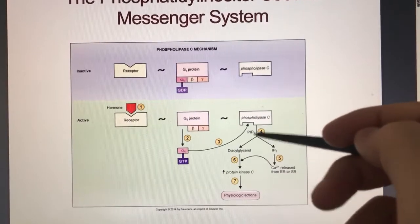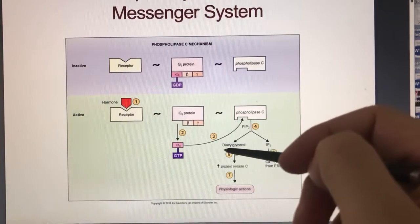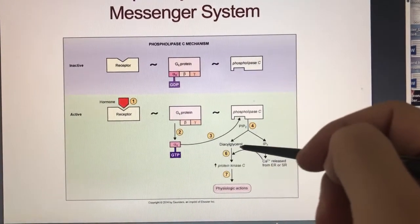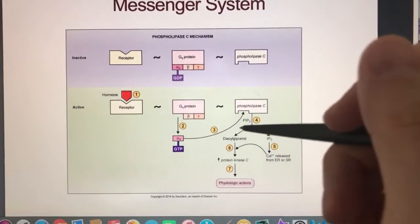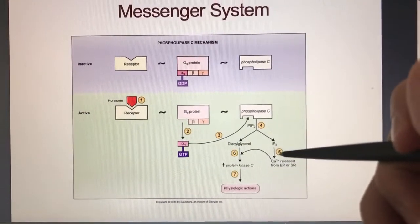Basically your PIP2 becomes either IP3 or DAG, diacylglycerol. But then your PIP2 goes to IP3. Becomes step five.